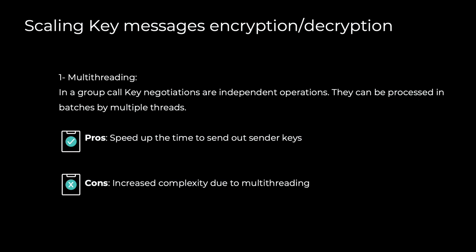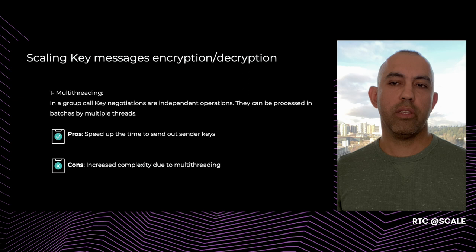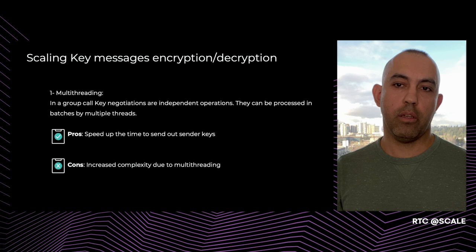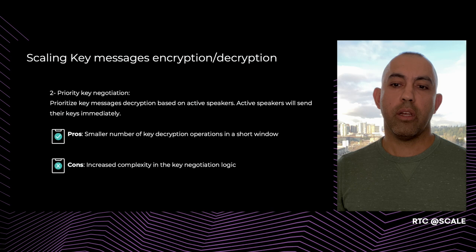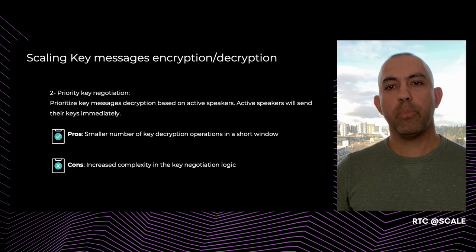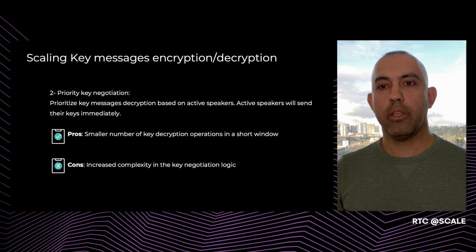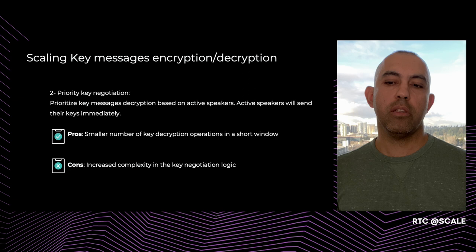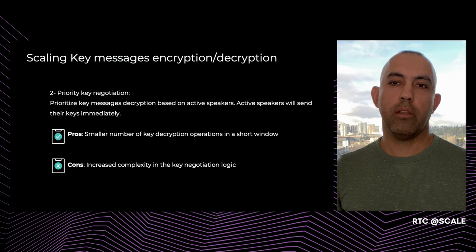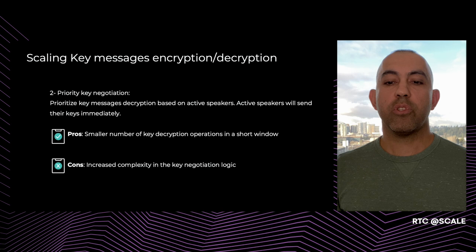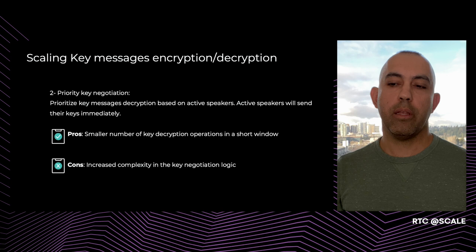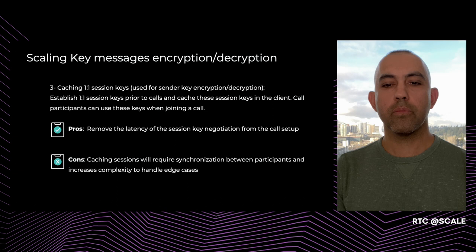There are a few possible approaches to address this. One is to use multi-threading: sender key messages are independent operations and can be processed in batches by multiple threads, reducing the time to send out sender keys. The downside is increased complexity inherent to multi-threading and the possibility of race conditions. Another solution is to prioritize sending keys based on active speakers, where active speakers send their keys first immediately while other participants delay their key negotiation. The benefit is that participants receive a smaller number of keys to decrypt — in an extreme case, only the keys needed to play back the media. However, this increases complexity in key negotiation logic and the risk of keys never being delivered.